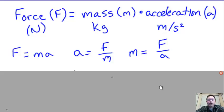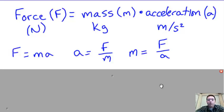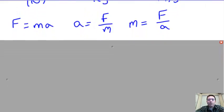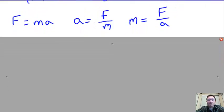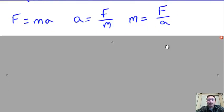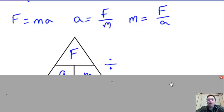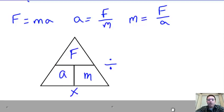Here are three different ways we can show the equation. F equals m times a, or force equals mass times acceleration. We can also rearrange it: acceleration is equal to force divided by mass, and mass can also be equal to force divided by acceleration.